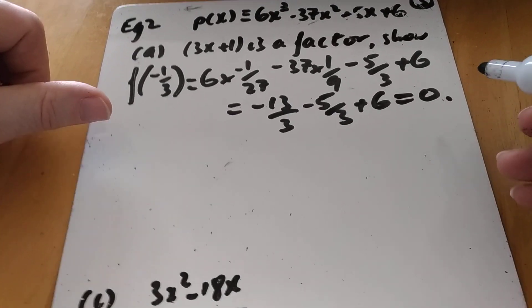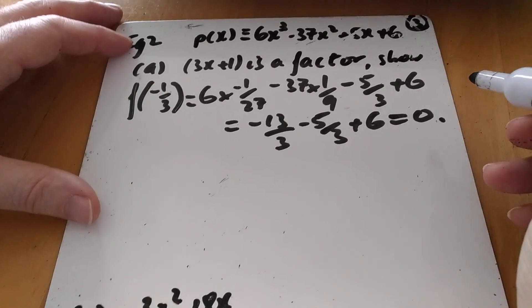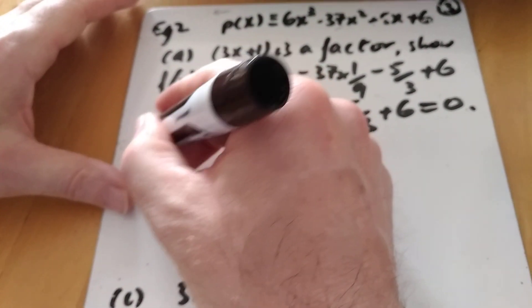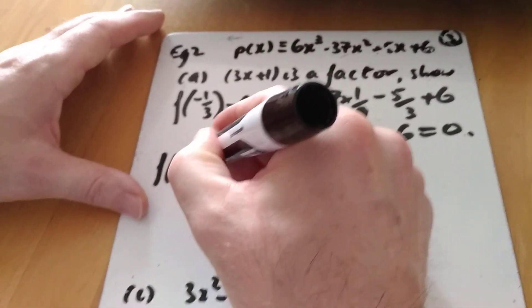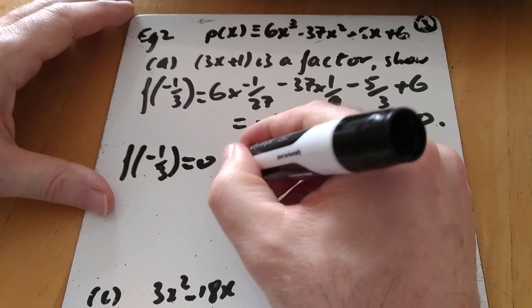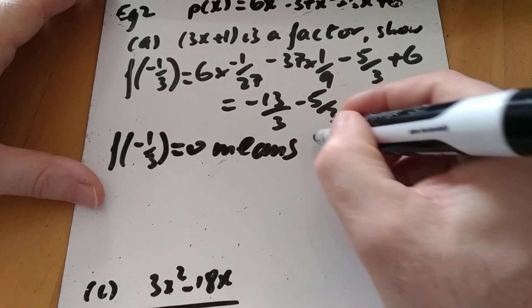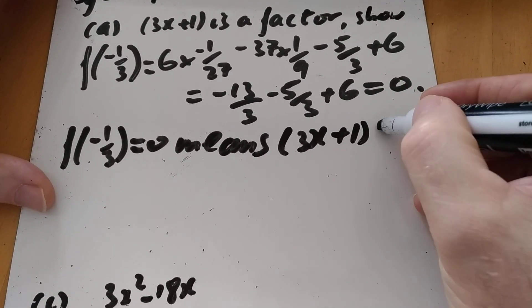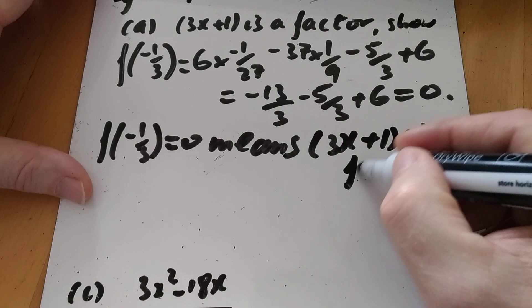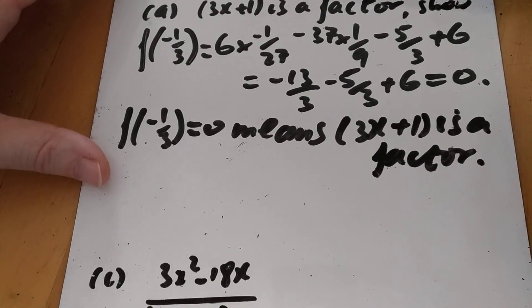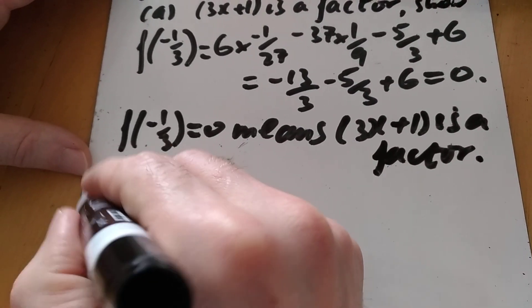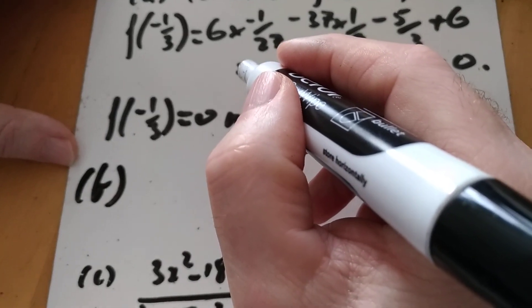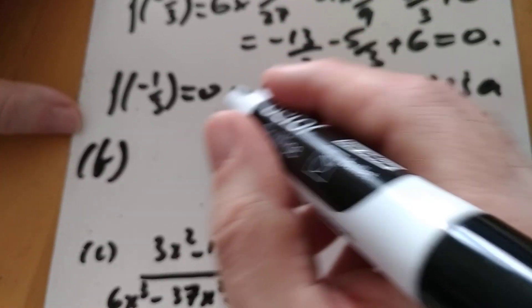That's only 1 out of the 2 marks. I need to state that since p minus a third equals 0, this means 3x plus 1 is a factor. If you don't write that, you don't get the last mark.